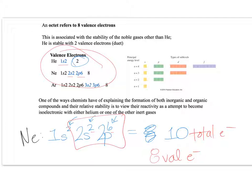Argon's outermost level is the third level: 3s2 3p6, a total of 8 valence electrons. This is going to be really important for both ionic and covalent bonding, so it's important to understand and know your valence electrons.